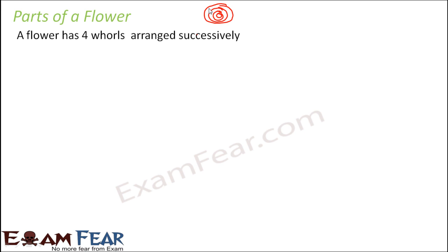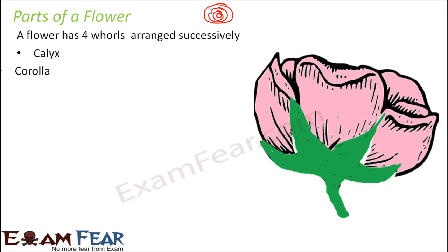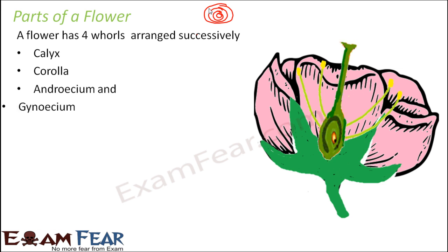So what are these four whorls? They are Calyx, Corolla, Androecium, and Gynoecium. The picture itself would have explained what I wanted to explain.